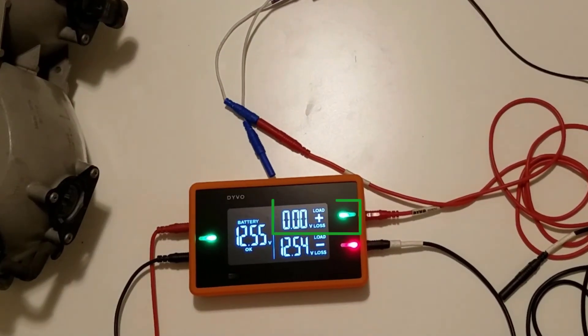And immediately you can see that my positive LED goes green. That tells me that I have a low voltage drop on the positive side, and we can see that we have a zero volt loss. If we want to see the voltage available, a quick press of the mode button shows that we have 12.54 volts available on the positive side of the circuit.